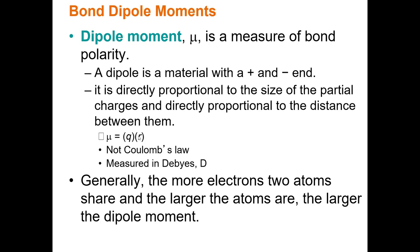The distance between two atoms is a function of how big those atoms are. Small atoms are very close together, so r is small; large atoms are much further apart, so r is larger for large atoms. Generally, the more electrons two atoms share and the larger the atoms are, the larger the dipole moment. We measure dipole moment with a unit called Debye (D) — for example, a value might be 3.8 Debye.